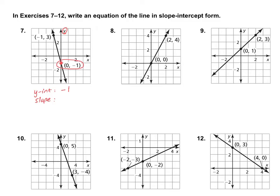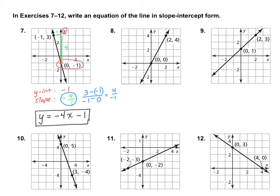Now we need to count our slope. Counting up 1, 2, 3, 4, and over 1 — the slope is negative 4 over 1, since it's heading in the negative direction. You can also use the slope formula. The y's are subtracted on top — that's 3 and negative 1 — and the x's on the bottom — that's negative 1 and 0. That gives positive 4 over negative 1, the same as negative 4 over 1. So the answer is y equals negative 4x minus 1. I wrote the slope as negative 4, not negative 4 over 1, because it's simpler.